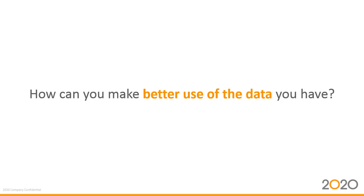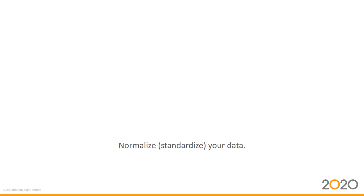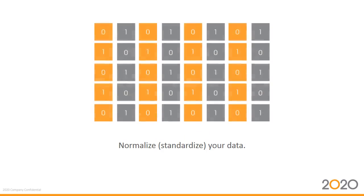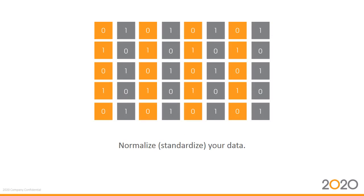How can you make better use of the data you have? First, you can normalize or standardize all incoming data so that by the time it comes to you, it looks and acts the same across the board. This is especially important when there are potentially so many different data sources for your orders. Normalization makes data maintenance much easier, it reduces redundant data, and it gives you a consistent launching pad from which to enrich data for manufacturing.